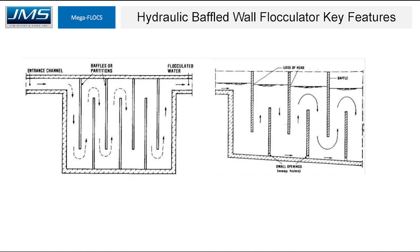The hydraulic baffled wall flocculators, also known as baffled channel flocculators or Alabama flocculators, consist of numerous walls with specific spacing to create the appropriate velocity gradient. The only way to adjust velocity gradient is by adjusting the flow. These walls can be made of concrete, wood, fiberglass, or stainless steel, and you can do a serpentine flow or over-under flow.